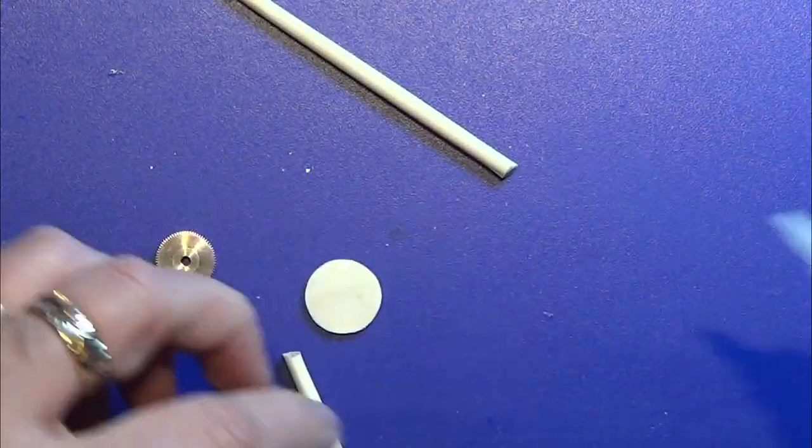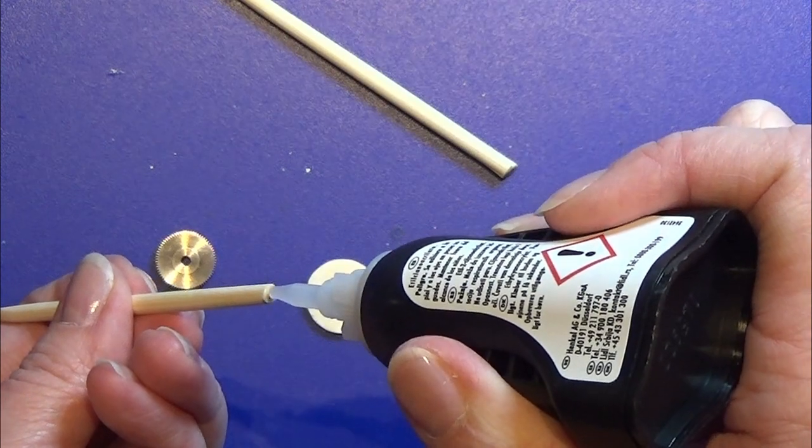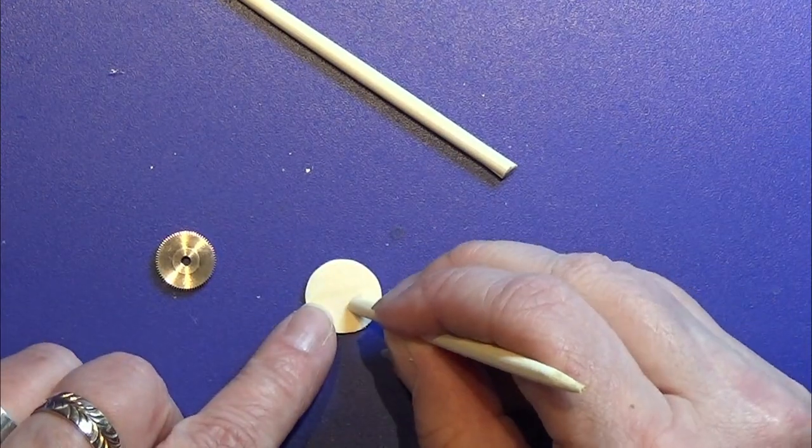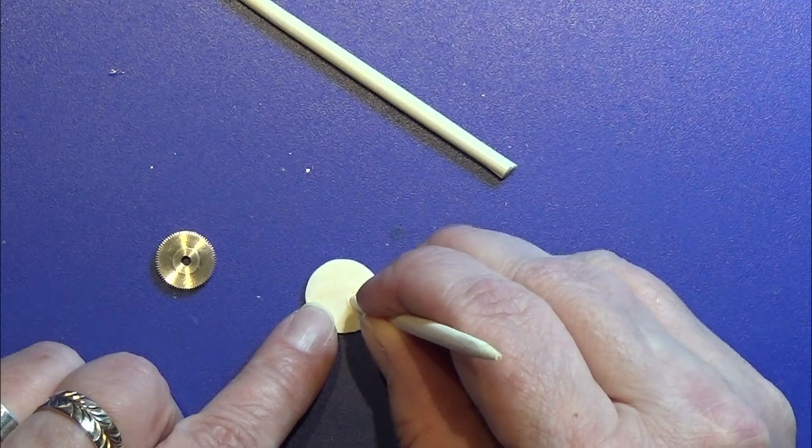I used my superglue gel to glue on the legs on this little circle that we just made.